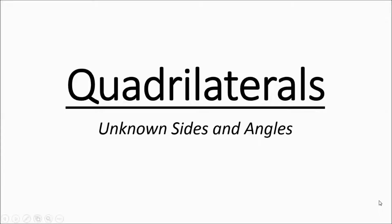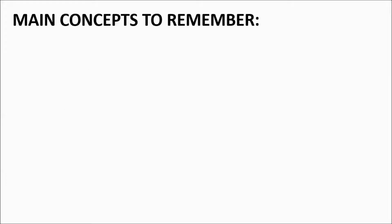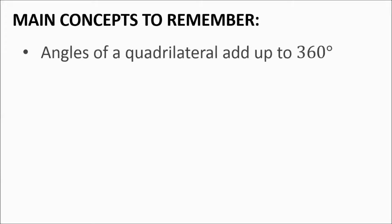This video is going to be covering quadrilaterals and their unknown sides and angles — just how to figure out what those missing angles and sides are. The main concept you need to remember: angles of a quadrilateral add up to 360 degrees. No matter what, any quadrilateral, the interior angles will add up to 360 degrees.